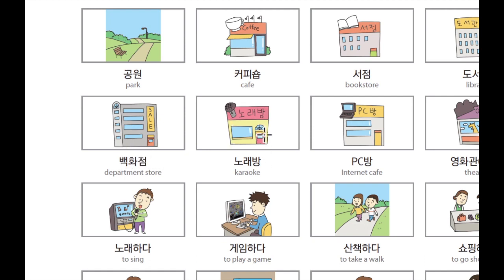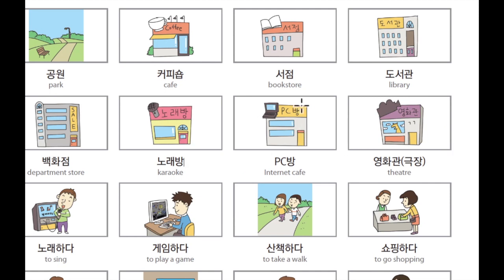And 이곳은 노래방입니다. 노래방 is karaoke. Karaoke in Korean is 노래방. And 이곳은 PC방입니다 — 인터넷 카페. 인터넷 카페 in Korean is PC방. 이곳은 영화관입니다. Theater. Theater in Korean is 영화관. Or we can say 극장. 극장. It's also theater.